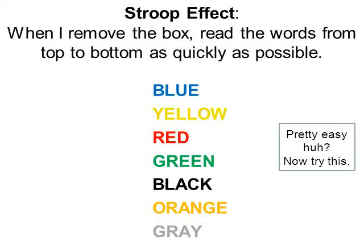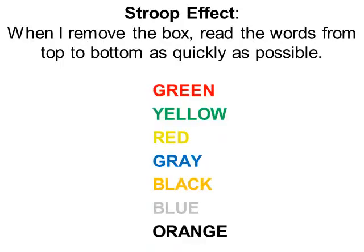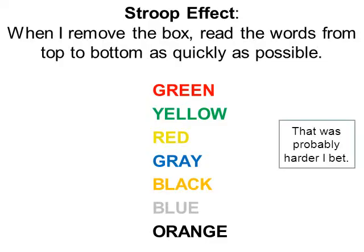That should have been pretty easy, because the color of the text is the exact same color as the actual word. But watch this — try this one. Same directions: when I remove the box, from top to bottom, read the words as quickly as possible. Three, two, one. That was probably a little harder, because the color of the text was different than the actual word. Your brain takes a moment to process what it's seeing. You may have seen the word 'green' but it was typed in red text, so you may have said 'gred' — a combination of green and red — and the same thing all the way down.